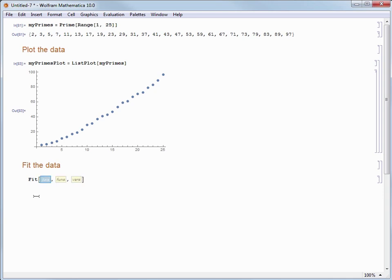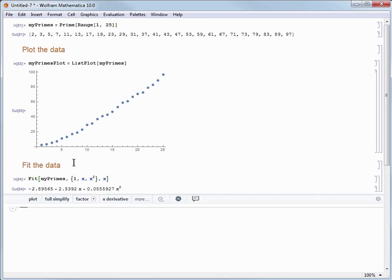Now we have to fill in the first argument. So that's where we will choose my primes. And then we need to put in the functions we want to fit. So let's assume a quadratic fit which means we need curly braces and the list of 1, x and x squared for the second argument. And then finally we put in x for the variable and we can hit shift enter to evaluate.